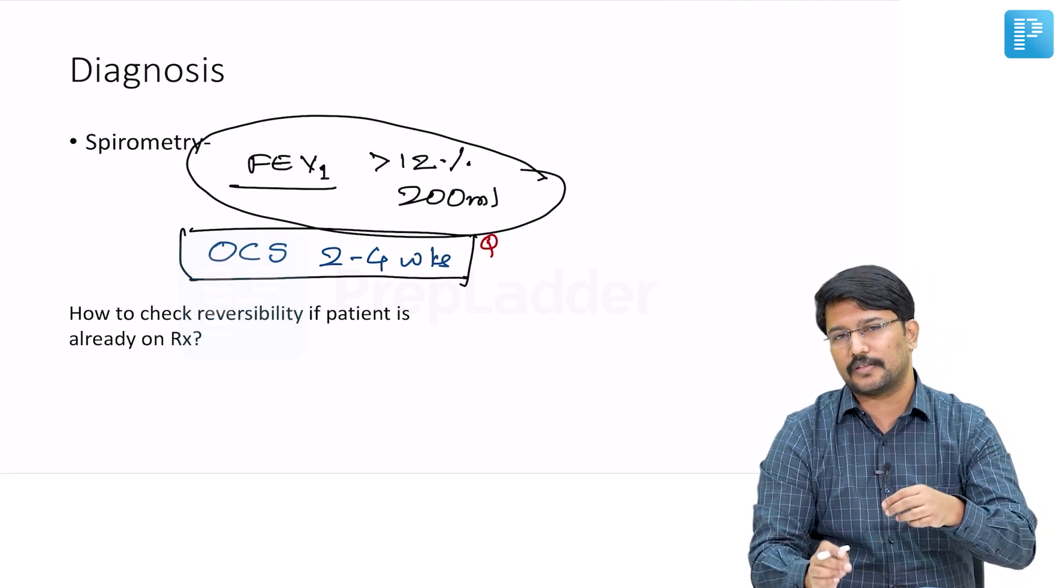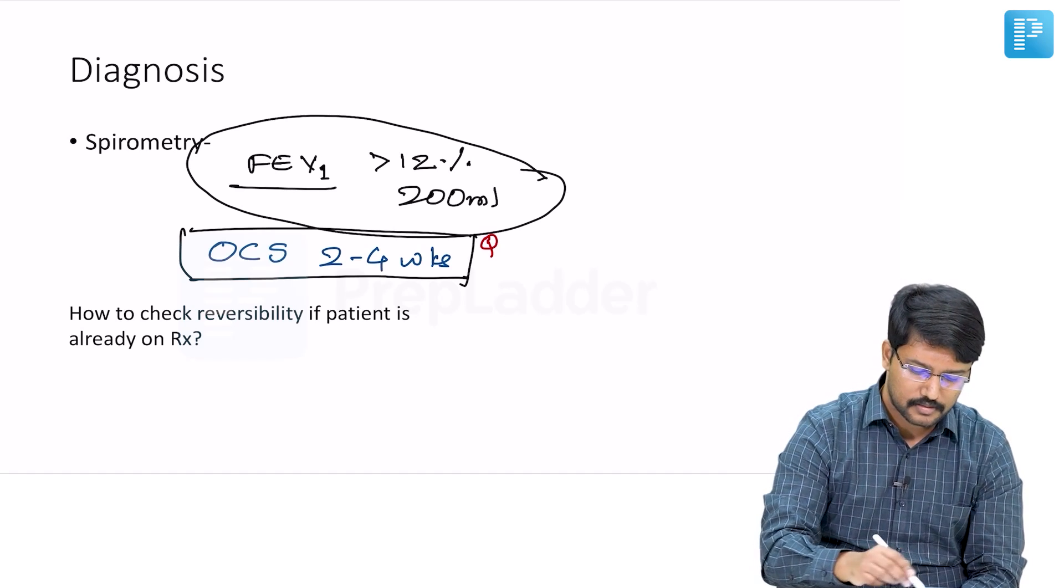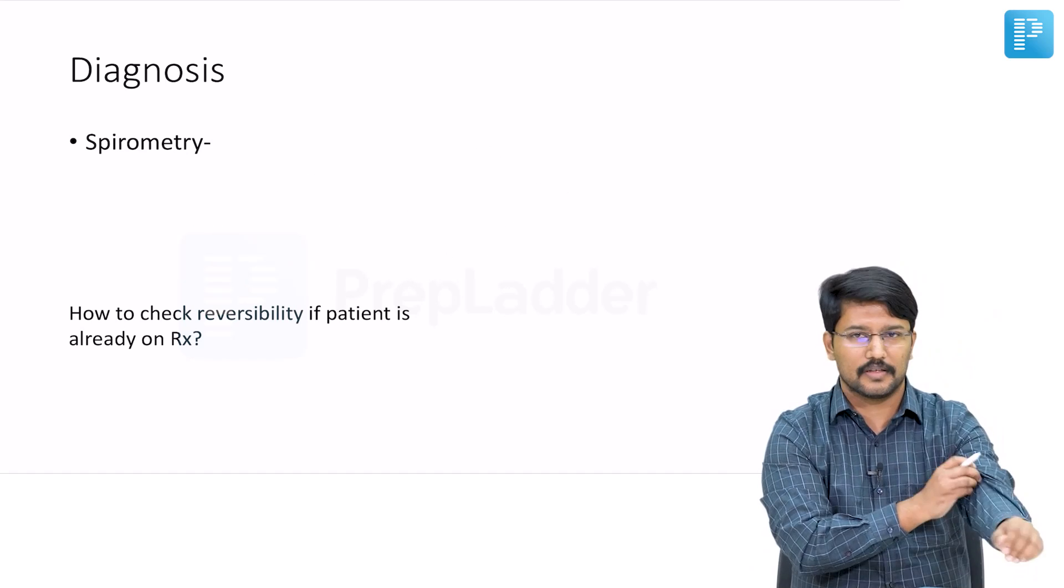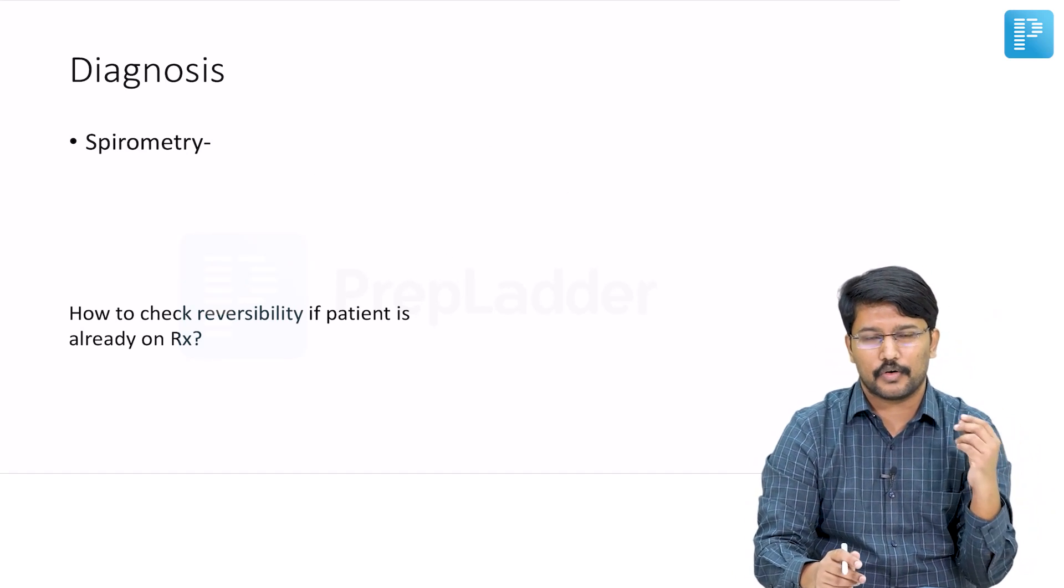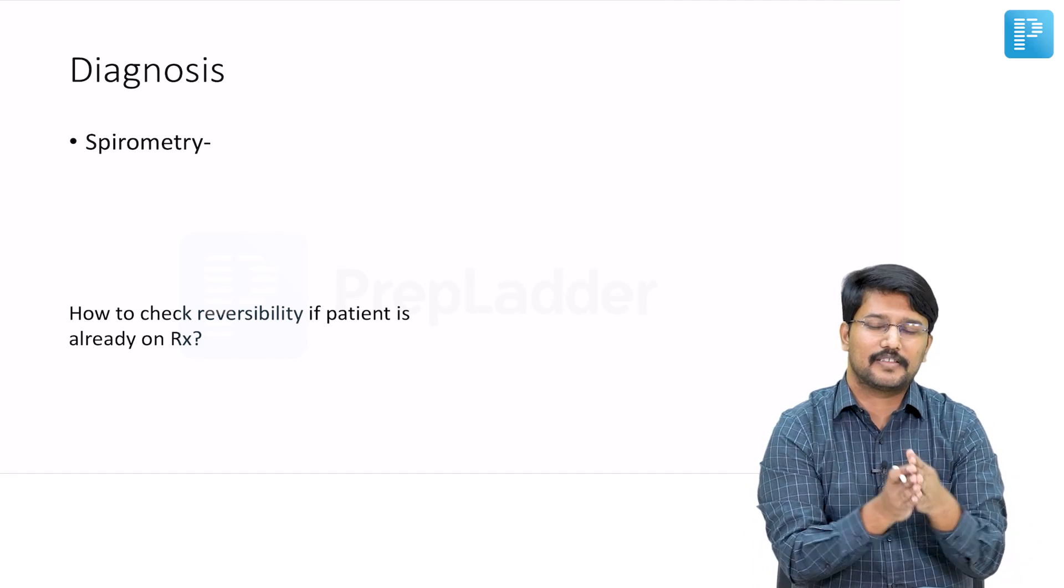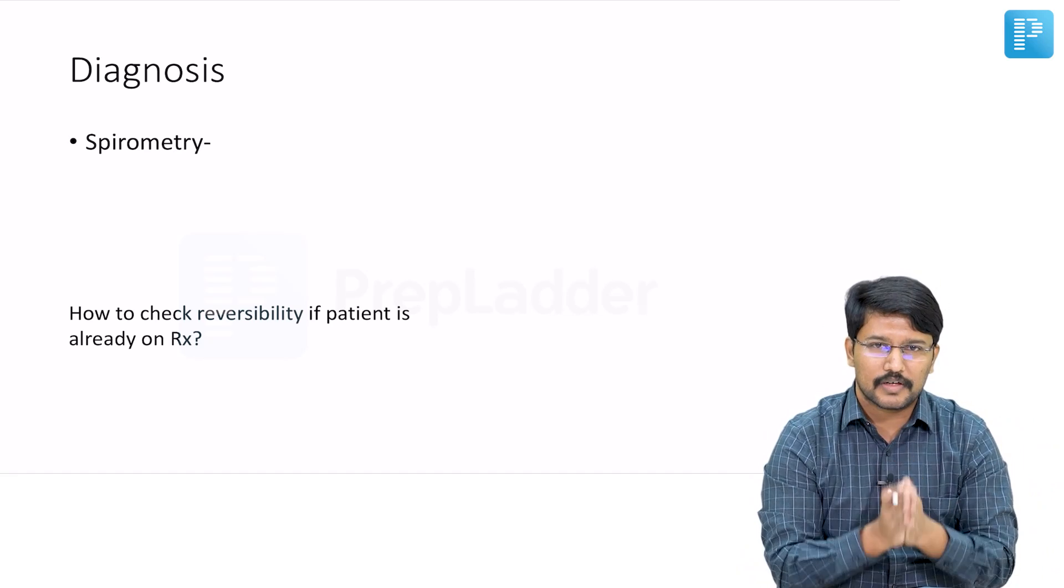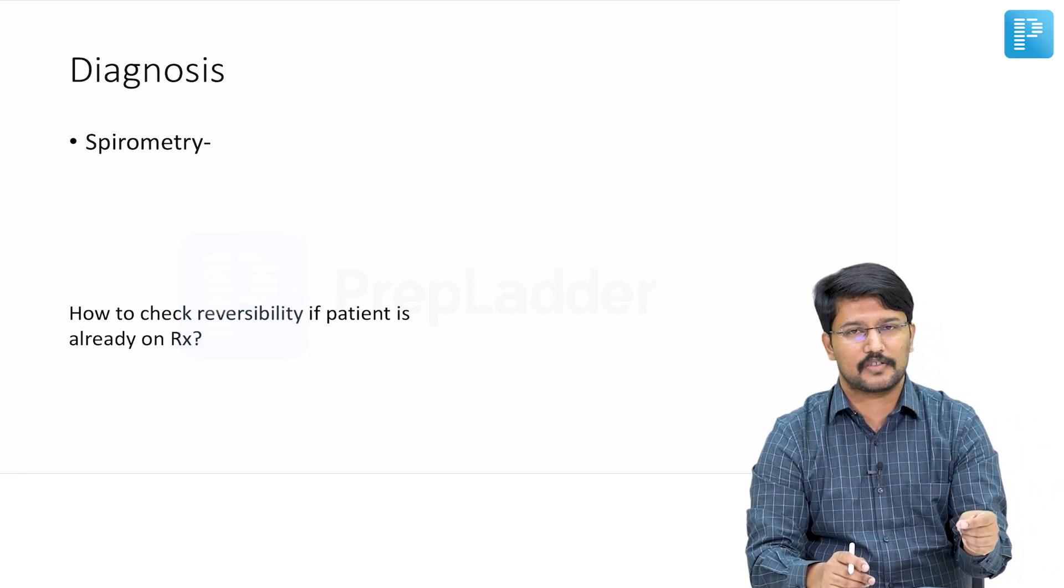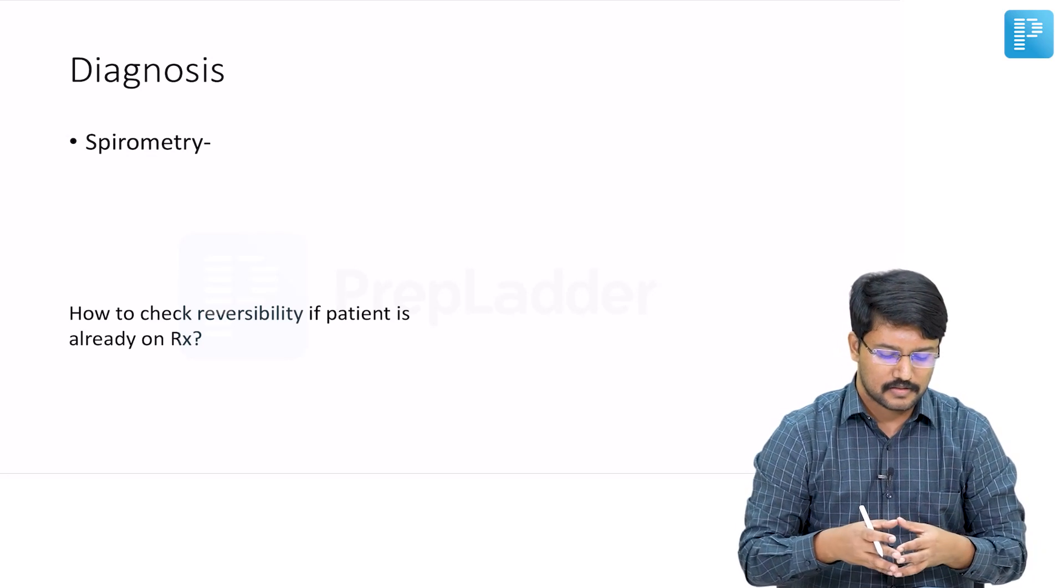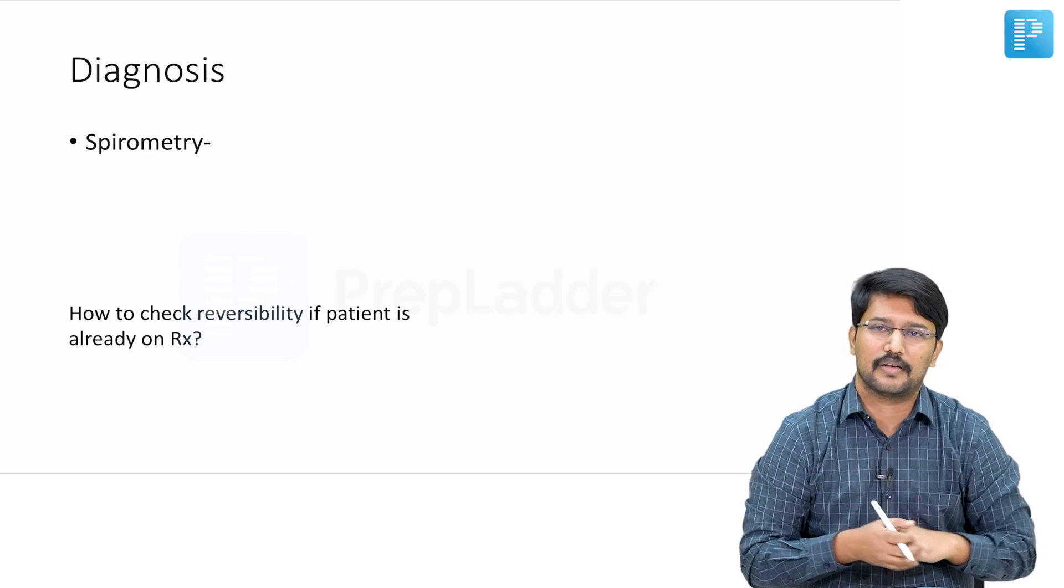It happens in routine practice that someone reaches a GP or a quack and they start off straight away with some medications like oral steroids or inhaled agents just because they had some chronic cough or some evidence of wheeze. But to confirm that they have bronchial asthma, now there is a challenge because they are already exposed to drugs.